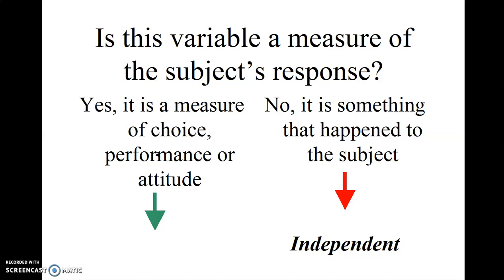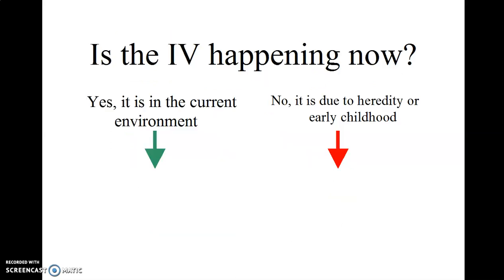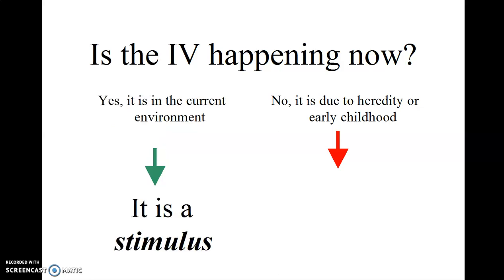Now suppose we answered this question, no, that the variable was actually something that happened to the subject, independently of the subject's own preference or efforts, in which case that would be an independent variable. Now we have to answer this question. Is the independent variable happening now? Is it in the current situation, in the current environment? If so, it is a stimulus.